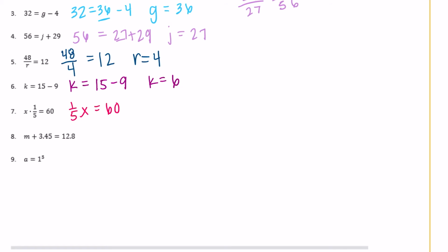So one-fifth of something is equal to 60. So in other words, we just need to multiply 60 by 5 and we can get that answer. So 60 times 5 would be equal to 300, because 6 times 5 is 30 plus a 0 is 300. So x is equal to 300.